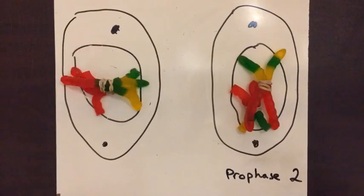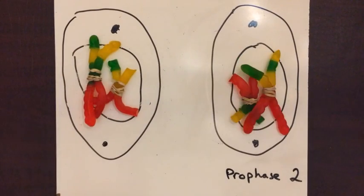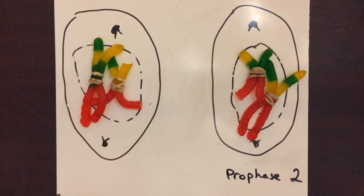This next phase is prophase II. In this phase, the nuclear membranes dissolve and the spindle fibers start to form from the centrioles.